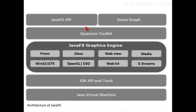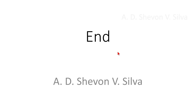Here you can see the JavaFX API and scene graph at the top. Below those, you can see the Quantum Toolkit. Below that, you can see the JavaFX graphics engine Prism. Win32, GTK, Glass, OpenGL, D3D, WebView, WebKit, Media, and GStreamer are inside the JavaFX graphics engine. Below the JavaFX graphics engine you can see the JDK API and tools, and below that is the Java Virtual Machine. This is the end of the presentation. Thank you very much for watching.